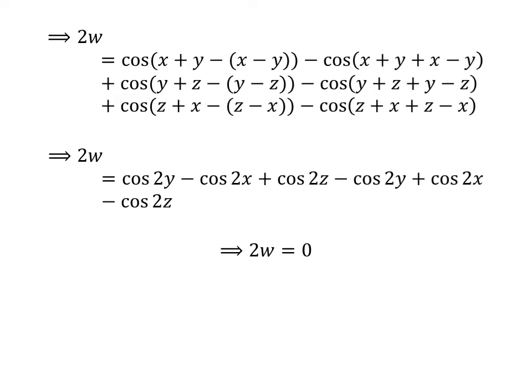In the right-hand side of the above equation, for every positive term there is a negative term. So, the right-hand side equals 0. Dividing the whole equation by 2 gives us w = 0, thus we proved the trigonometric identity.